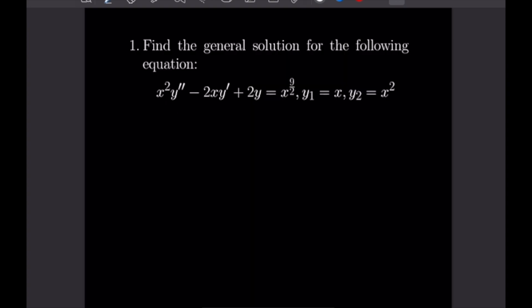Problem one: find the general solution for x²·y'' - 2x·y' + 2y = x^(9/2), given the solution set y1 = x and y2 = x². Since we have these complementary solutions, we write out our definition for the particular solution: yp = y1·z1 + y2·z2, which is yp = x·z1 + x²·z2.